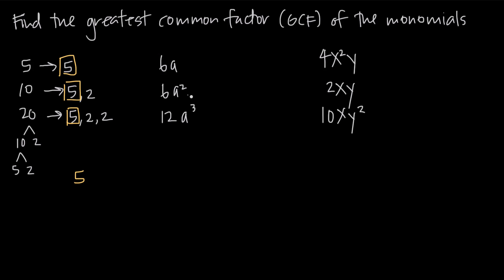Let's look at a slightly more complicated example. We have the three monomial numbers 6a, 6a squared, and 12a cubed — so we've got a variable involved. We need to break these monomials down first by looking at the constant coefficients: 6, 6, and 12. Then we'll look at the variables for a.